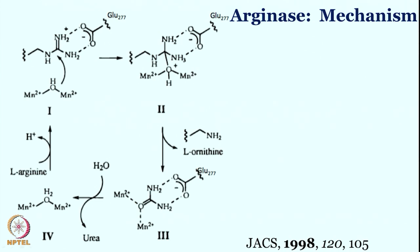The pKa value of this water is such that at pH 7 you can deprotonate it to regenerate the manganese 2+ manganese hydroxo species. None of these metal centers undergo any additional oxidation state change — wherever they start, they stay there. Zinc 2+ remained zinc 2+ throughout the catalytic cycle; that is quite a standard phenomenon for hydrolytic enzymes.